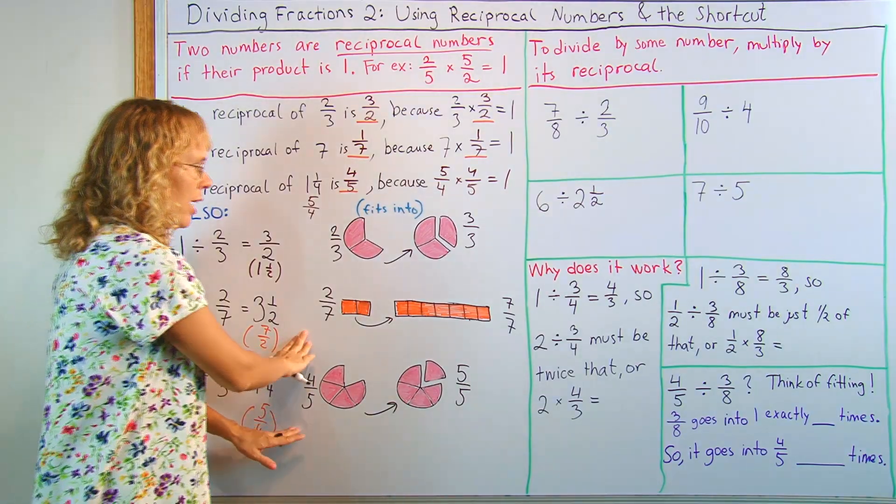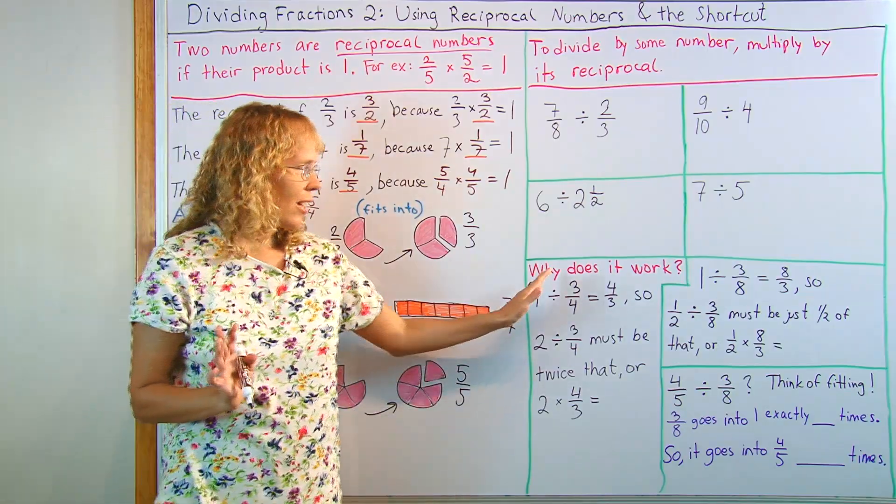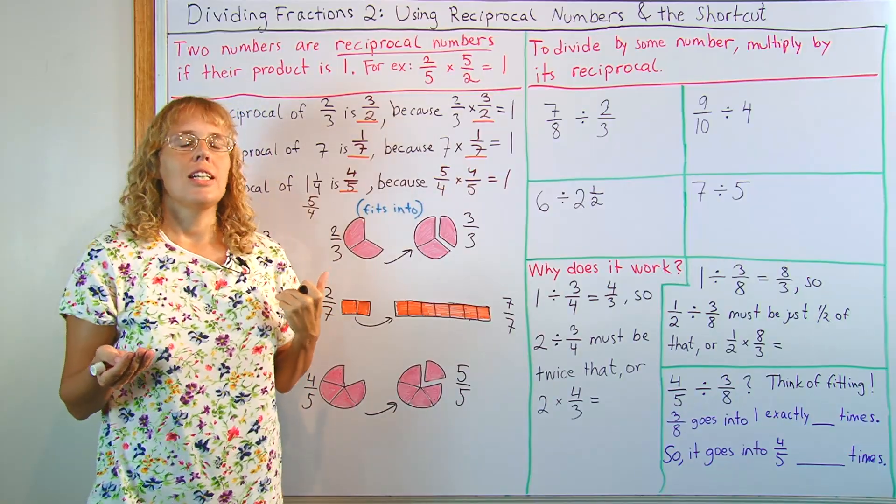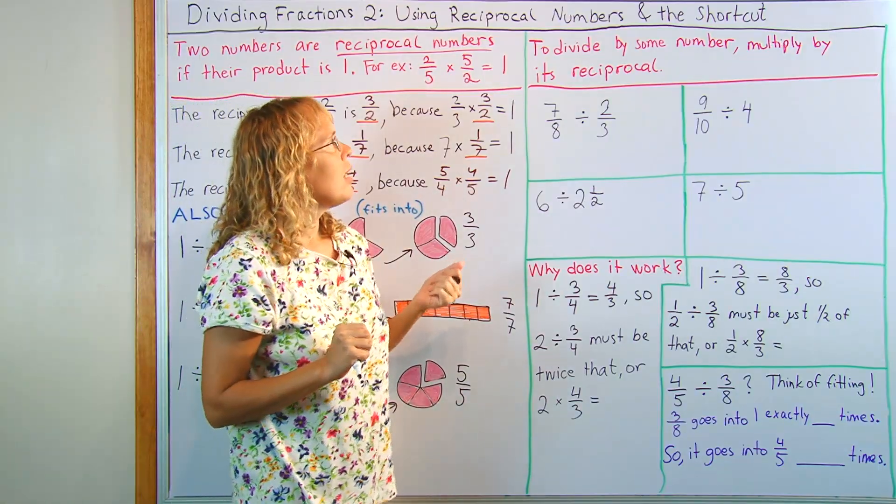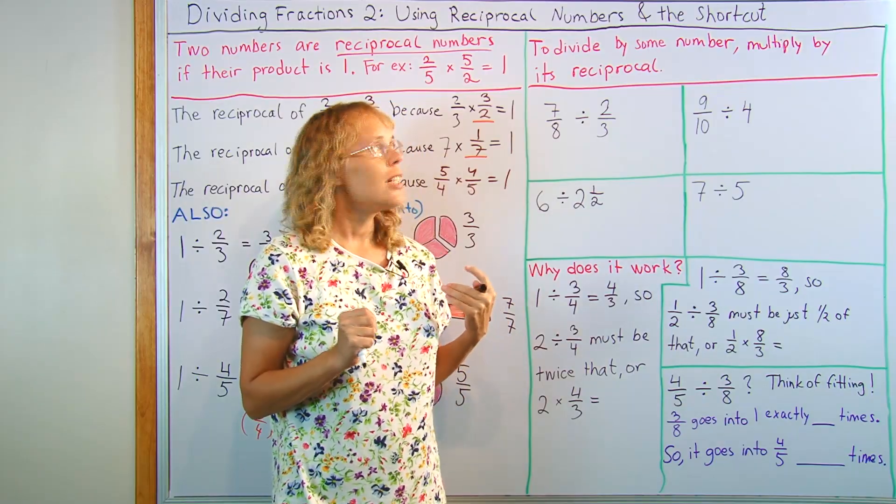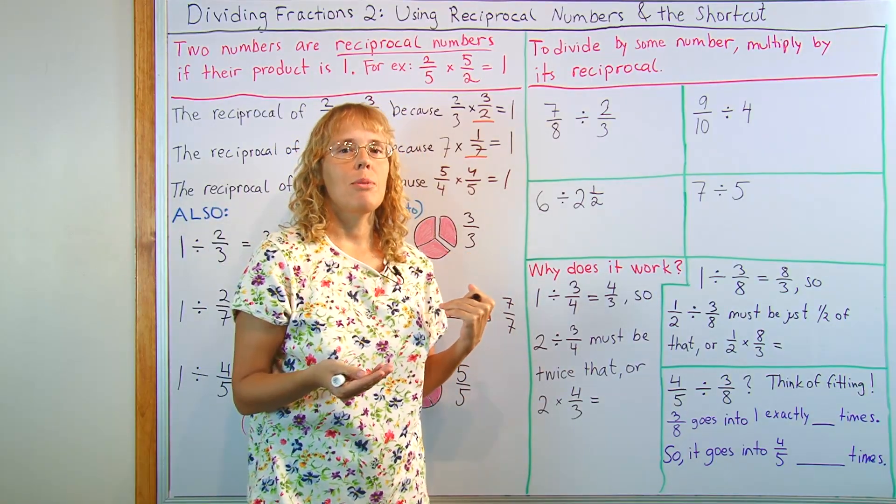Now, we will use this idea later when we look at why the rule works. Let's now first look at the rule for fraction division and do a few problems. Okay, to divide by a fraction, or by any number actually, you can just multiply by its reciprocal number.